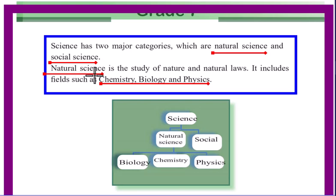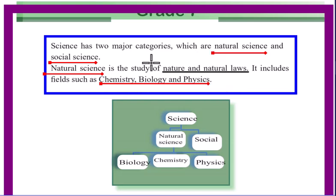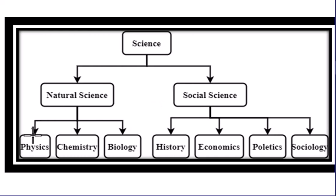Natural science is the study of nature. It includes physics, chemistry, and biology. Physics is the study of energy, matter, and their interactions. Chemistry involves chemical reactions. Biology is the study of living things. Social science is the study of economics, politics, and sociology.